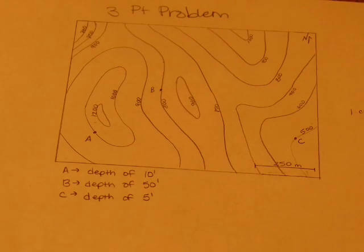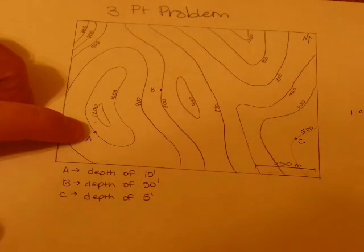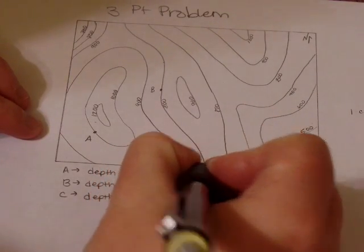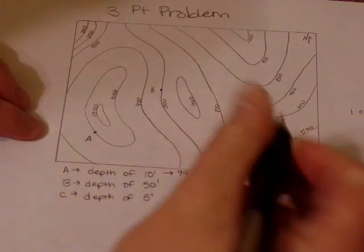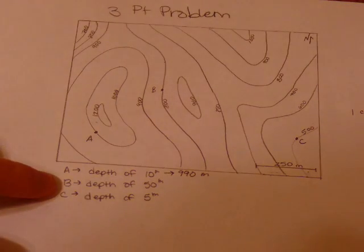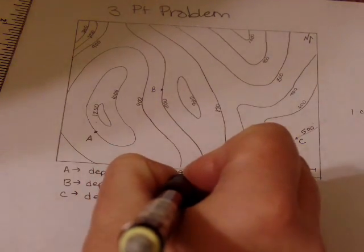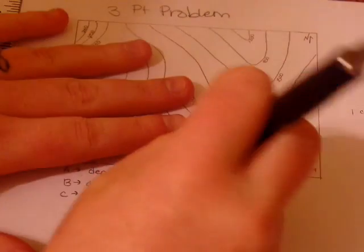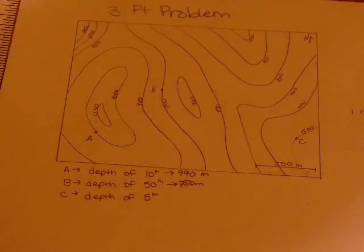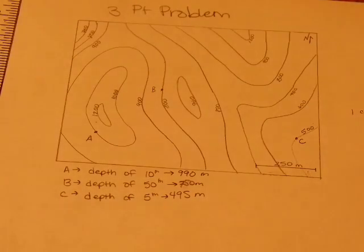So the first thing that we have to do is find the actual depths of A, B, and C. So A is on the 1,000 meter contour interval, so that means that A is actually at 990 meters. Oh sorry, these should be meters, not feet. B is at a depth of 50 meters, so we're going to do 800 minus 50, that's 750. And C is at a depth of 5 meters, so that's 495 meters. Okay, so now we have the true depths.